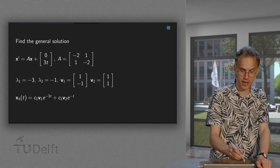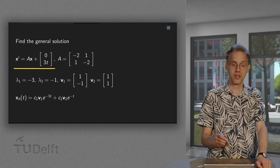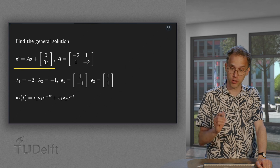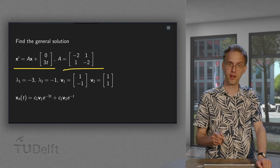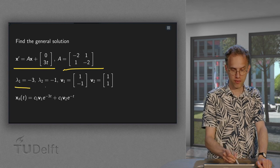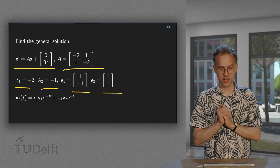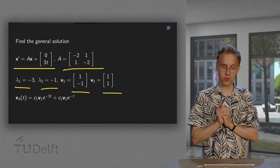So, what is our problem? x' equals A times x plus some rubbish, some non-homogeneous part with the A over here, same as in the previous video, so we know eigenvalues, we know eigenvectors, we learned in the linear algebraic course how to do this.